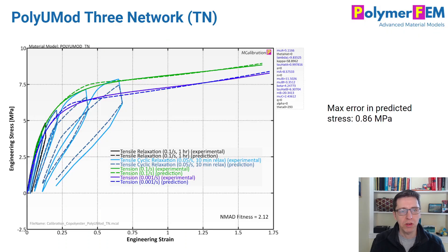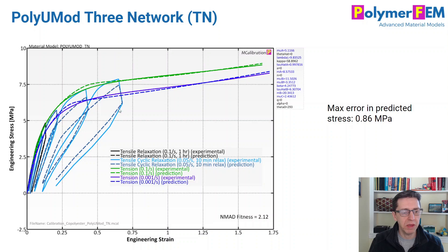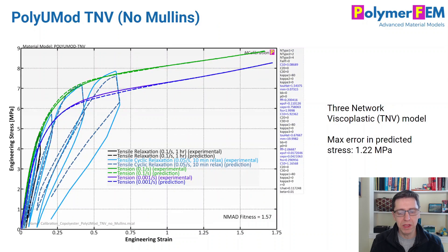How about three networks? Here's one of my favorite models — the three-network model in the PolyUMod model library. It has an average error of 2.1% — pretty good. The curves now look very good even during unloading. The maximum error of any point is 0.86 MPa — so far the best we've seen. This is something you can start living with.